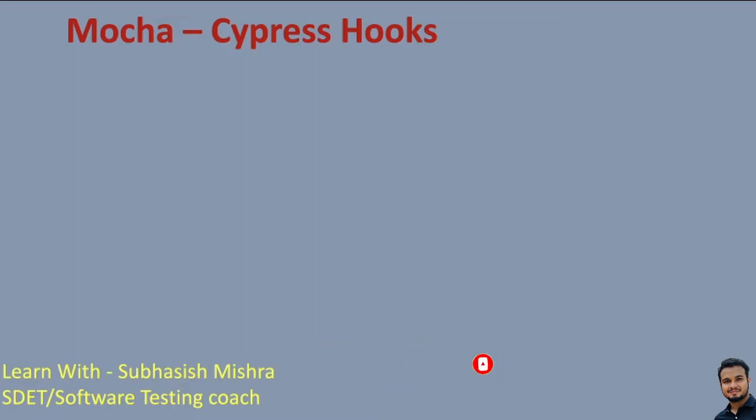In our previous videos, we have already learned about what is Cypress and what are the different features Cypress has. We have seen how to install Cypress, how to write test cases in Cypress, how to locate elements in Cypress, how to interact with different web elements like input box, radio button, check box, drop down, alerts and all. If you have not watched those videos, please do watch it. I have explained everything step by step. I will always recommend to watch the complete playlist — then only you will be able to understand everything in detail.